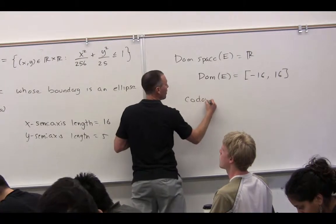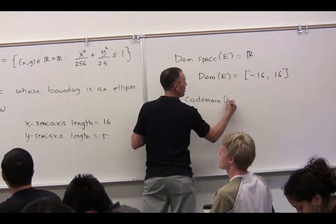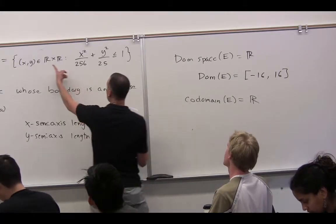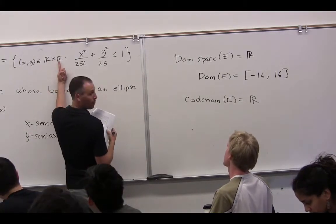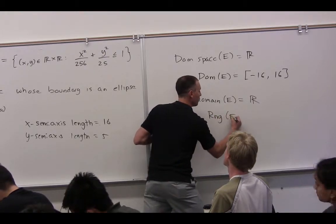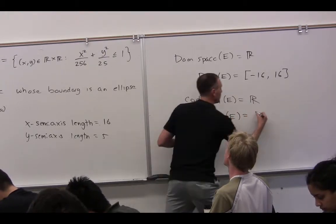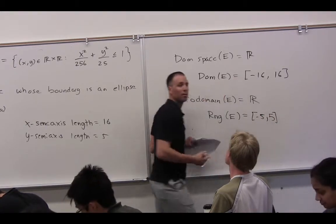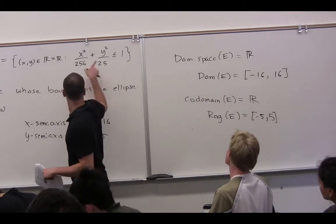What's the co-domain of E? The set of all second coordinates. Where does the second coordinate come from? R. What's the range of E? Touches or non-touches? Why does it touch? Yep.